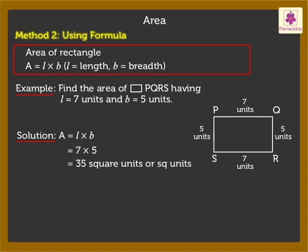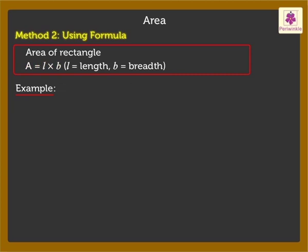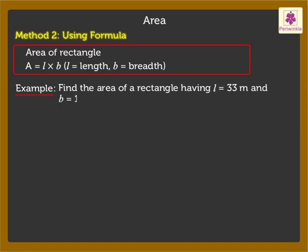Now let's solve one more example. Find the area of a rectangle having length 33 metres and breadth 10 metres. Area equals length into breadth, which is 33 into 10, which is equal to 330 square metres.